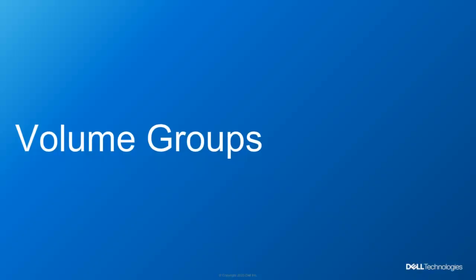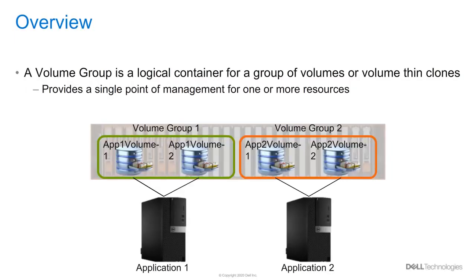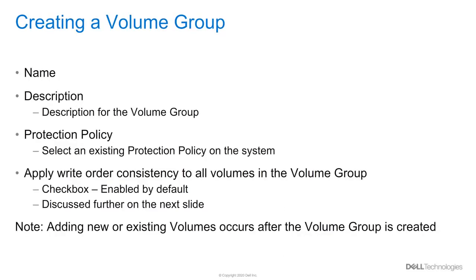After discussing volumes, we'll talk about volume groups. A volume group is a logical container with multiple volumes or volume thin clones. The reason an administrator would use a volume group is to have a single management point for managing different volumes at the same time. When creating a volume group, only a name is required. The volumes will be added after it's created. The volumes contained in a volume group are called members, and can be found under the properties of the volume group. Setting a protection policy is also available during creation. The last option is to apply write order consistency to all volumes in the volume group.